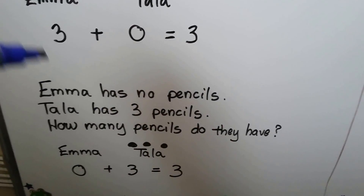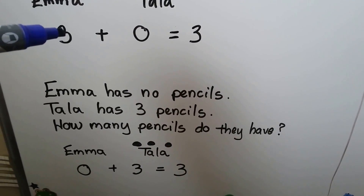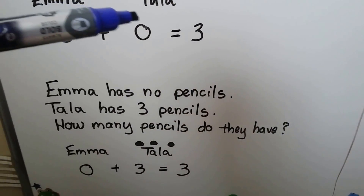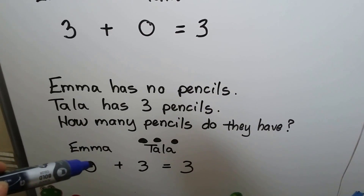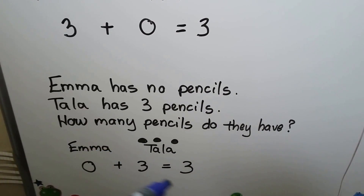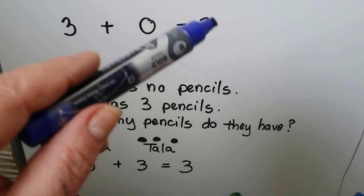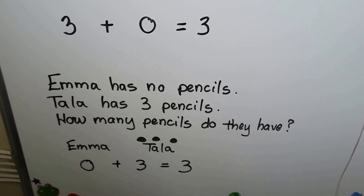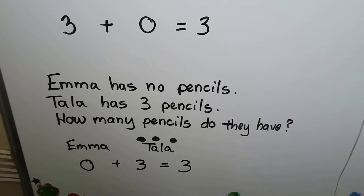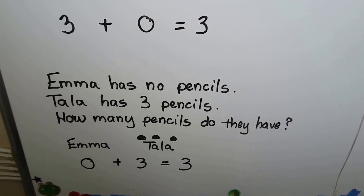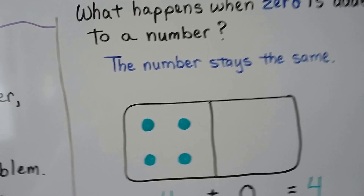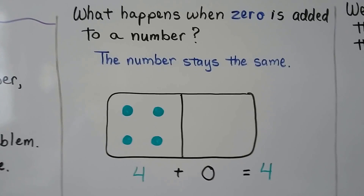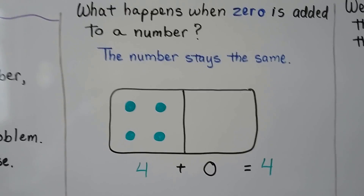It doesn't matter if the three is in front or here, or if the zero is in front and the three is here — it still equals three. We're still adding zero to three. What happens when zero is added to a number? The number stays the same.